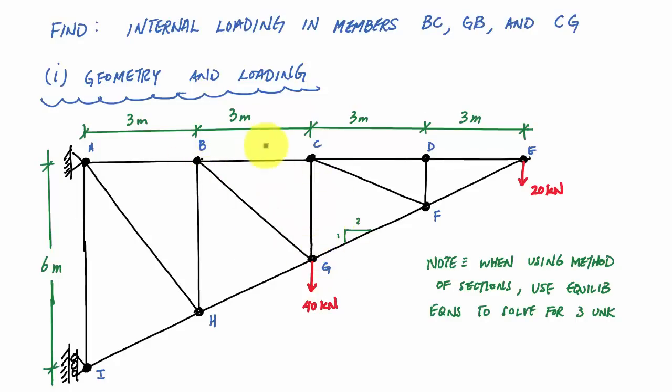In this problem, I can't really make a cut here and isolate a section or portion of my truss directly. So I have to do this incrementally — I can't just straight up cut through it and find three unknowns. But it looks like if I cut right here, I'll get BC, BG, and GH.